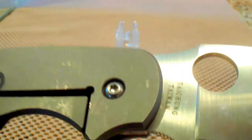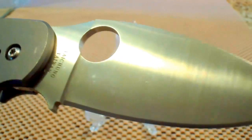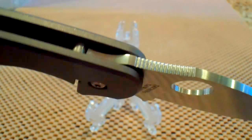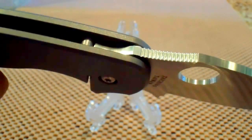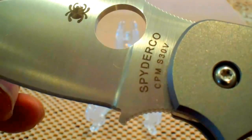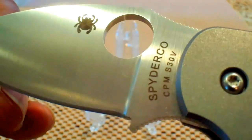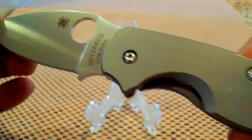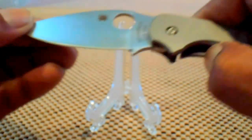Made in Taiwan. How about that? This is a hot seller, still available in Titanium and several other different versions. Nice jimping there on the scale, on the spine of the blade, I'm sorry. The steel is an S30V, CPM S30V, which I believe will become Spyderco's flagship steel in the future.